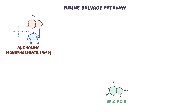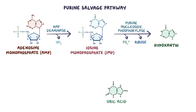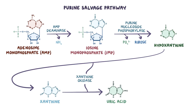On the other hand, for AMP to become uric acid, first the enzyme AMP deaminase removes an amine group from it, turning it into IMP. Then purine nucleoside phosphorylase comes in and removes the phosphate and the ribose from IMP, making hypoxanthine. Hypoxanthine is then oxidized twice by xanthine oxidase — first to become xanthine, and then finally to become uric acid.